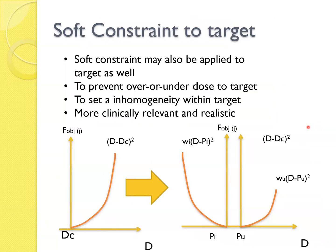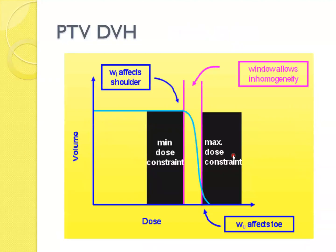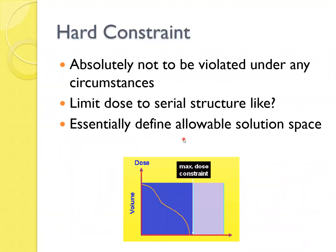So in IMRT or VMAT, there are two concepts: soft constraint and hard constraint. So the soft constraint also applied to the target as well, to prevent over or underdose the target, that the inhomogeneity within the target is more clinically relevant and realistic. And this is the difference. This is a heavy penalty. You can see the curve. And this is a lower, slightly loose penalty. The shoulder is high. And this is a lower soft constraint. You can see the inhomogeneity, high infinity is there.